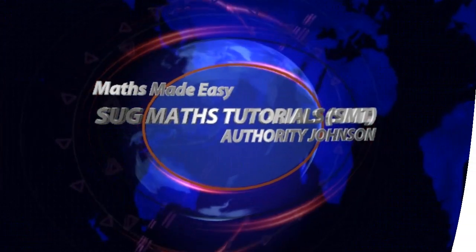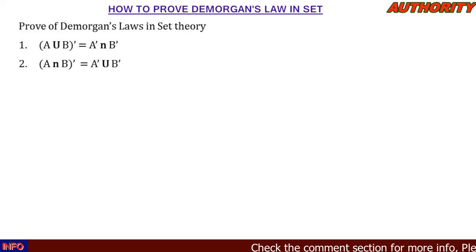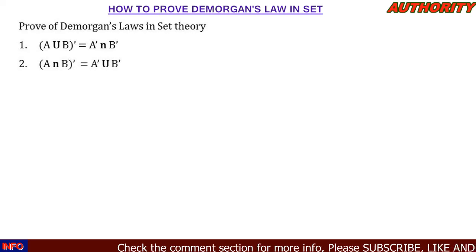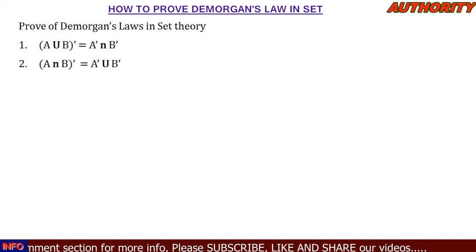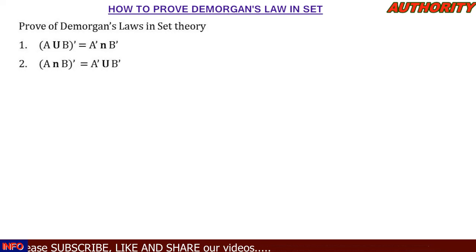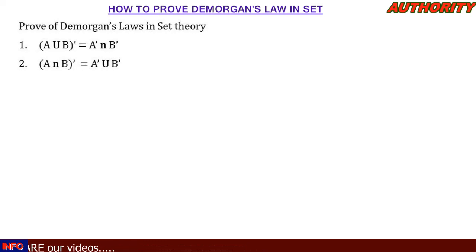Welcome. Today let's talk about De Morgan's Law in set theory. De Morgan's Law states: number one, (A union B) complement is equal to A complement intersection B complement; and number two, (A intersection B) complement is equal to A complement union B complement. We want to show that this law is true — we want to prove it.